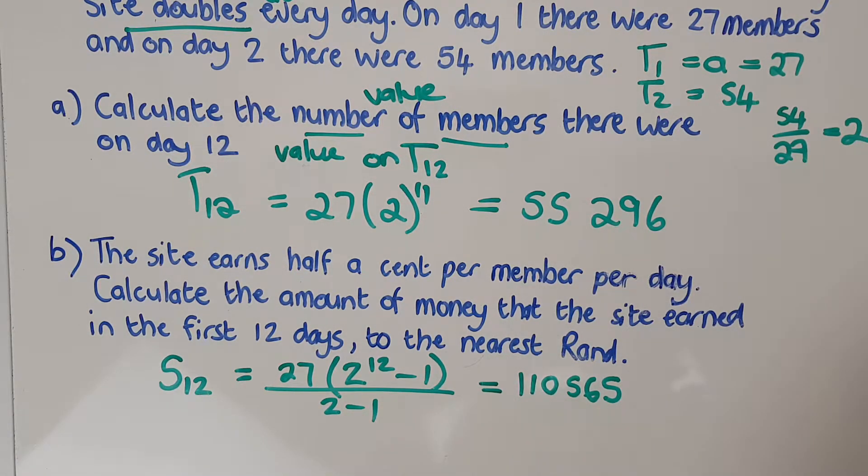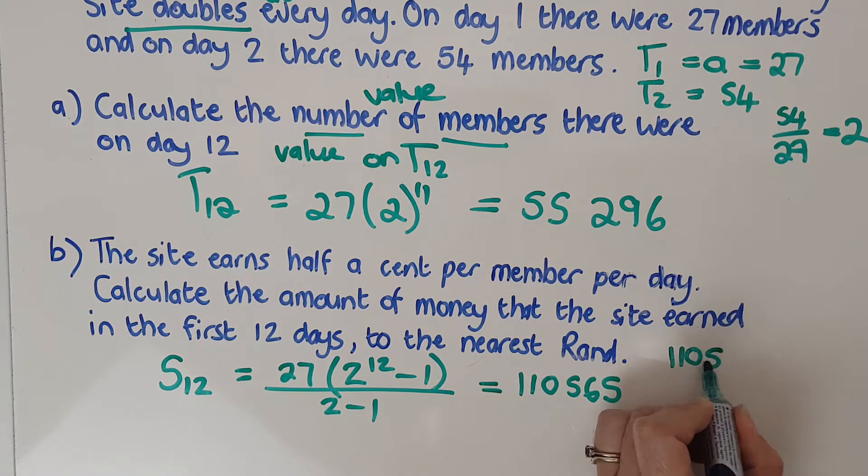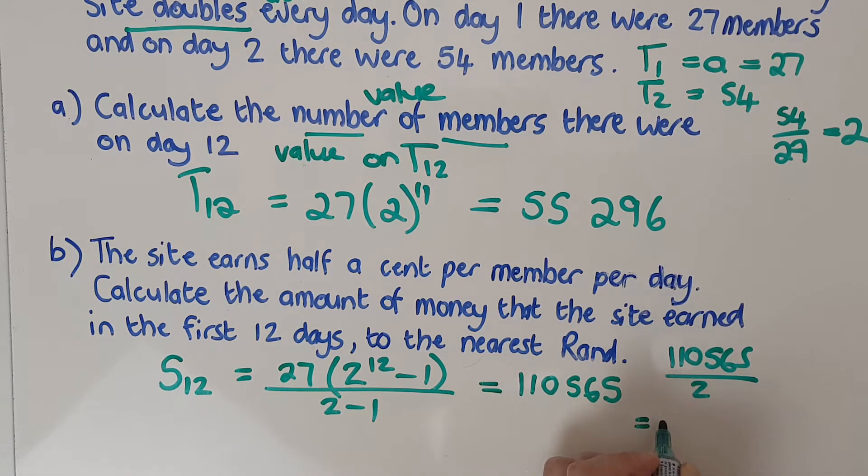It's just the one last little trick is I would need to divide that by 2. So I'd need to take that number, 110,565, and I need to divide it by 2 to get me to the number of cents. So I've now got 55,283 cents. And then to get that into rands, I'd have to divide by 100. So it is 552.83 rand.